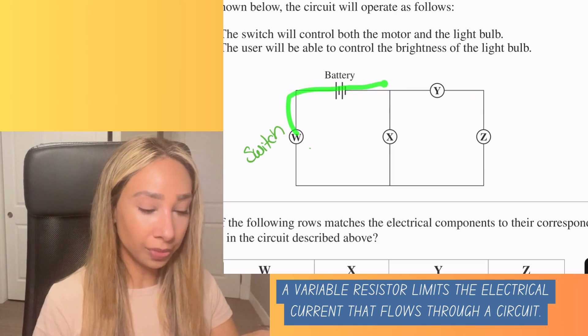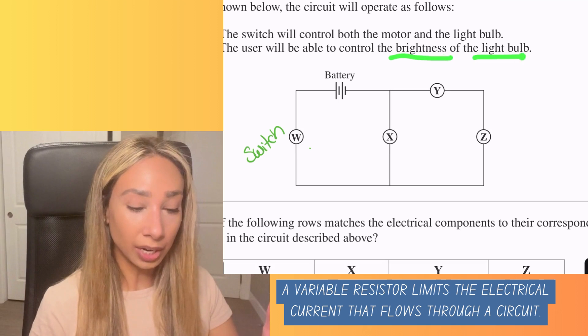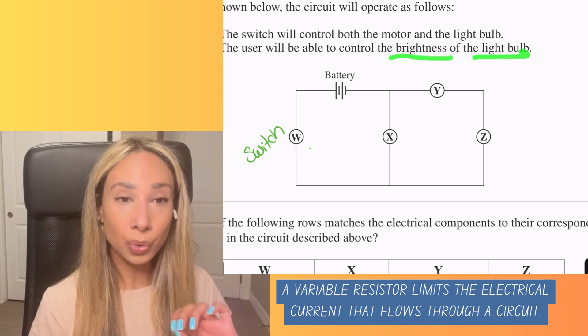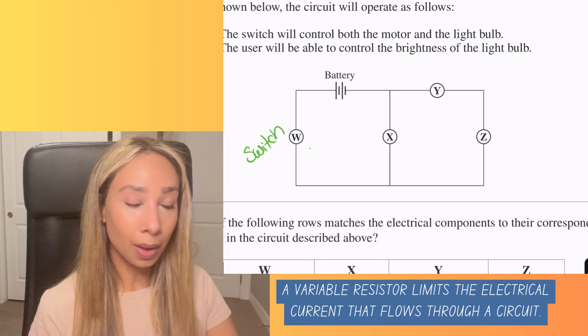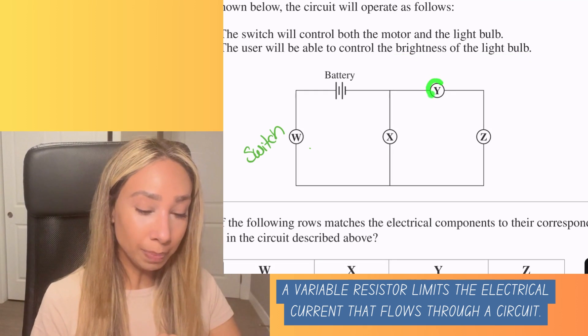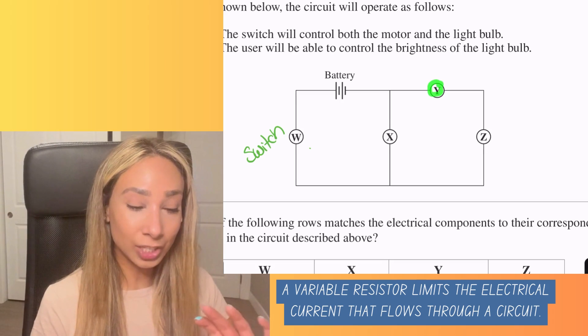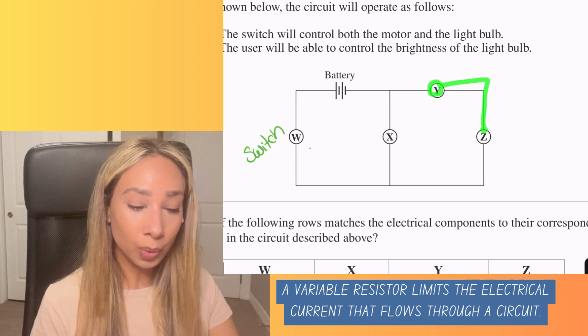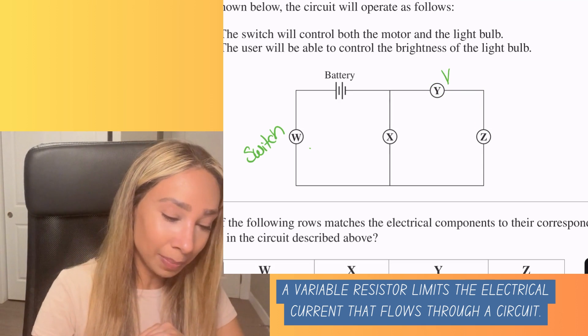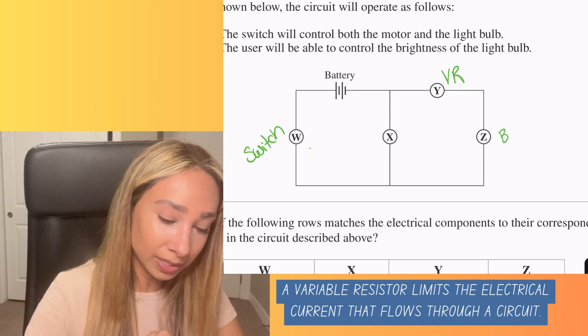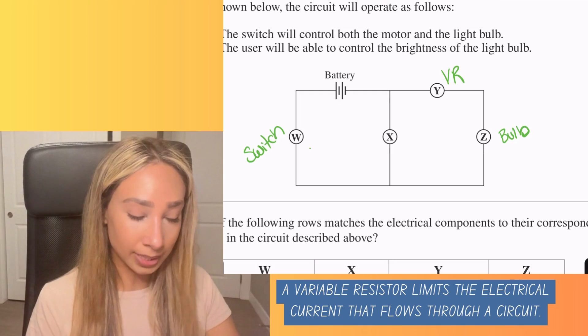And then we're going to have our flow of current through the battery. And then it says here, our variable resistor, we know is going to be used to control the brightness of the light bulb. That means our variable resistor has to come before the light bulb. So it should be this one here because as that is controlling the brightness of the light bulb, you would want it to work before the bulb. So that means this one is going to be our variable resistor. And this one here is our bulb. So the variable resistor is going to control the brightness of the bulb.